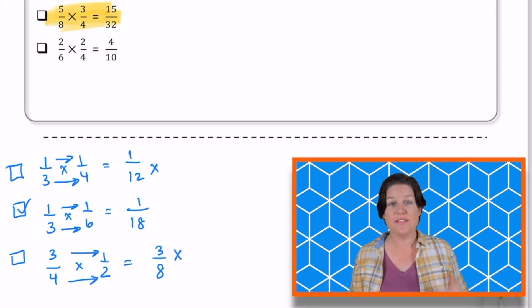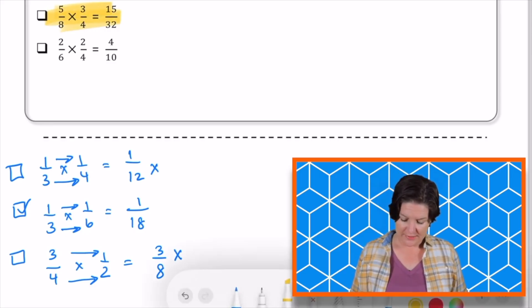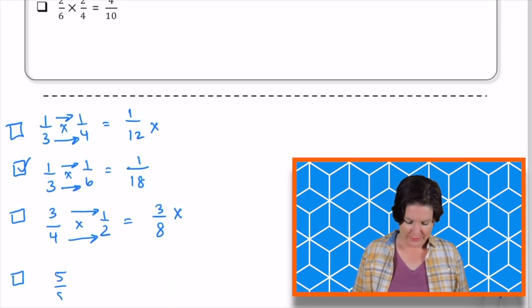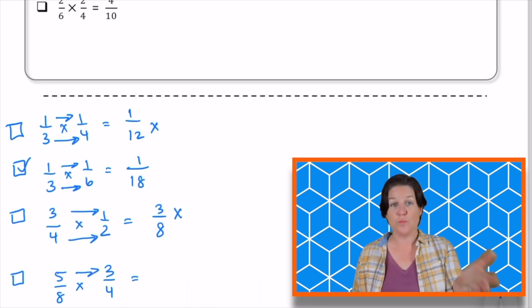Next up, we've got 5/8 times 3/4, is that 15/32? I think that's how you would say that denominator. 5/8 times 3/4. 5 times 3 equals what?